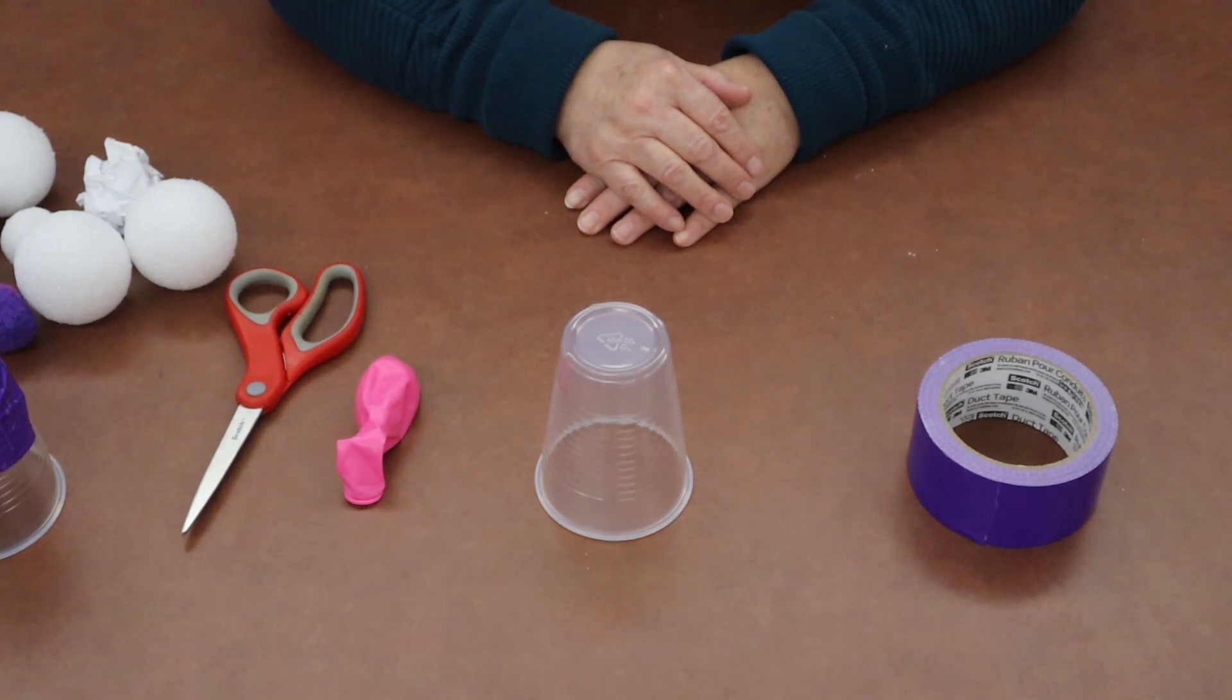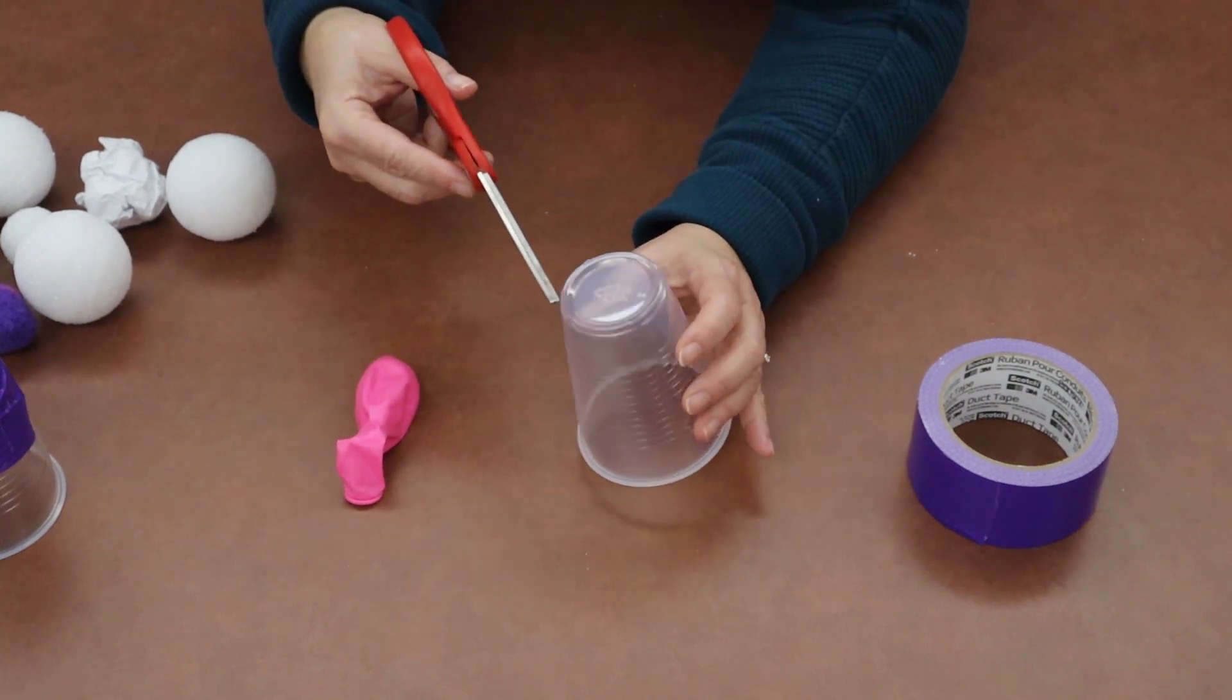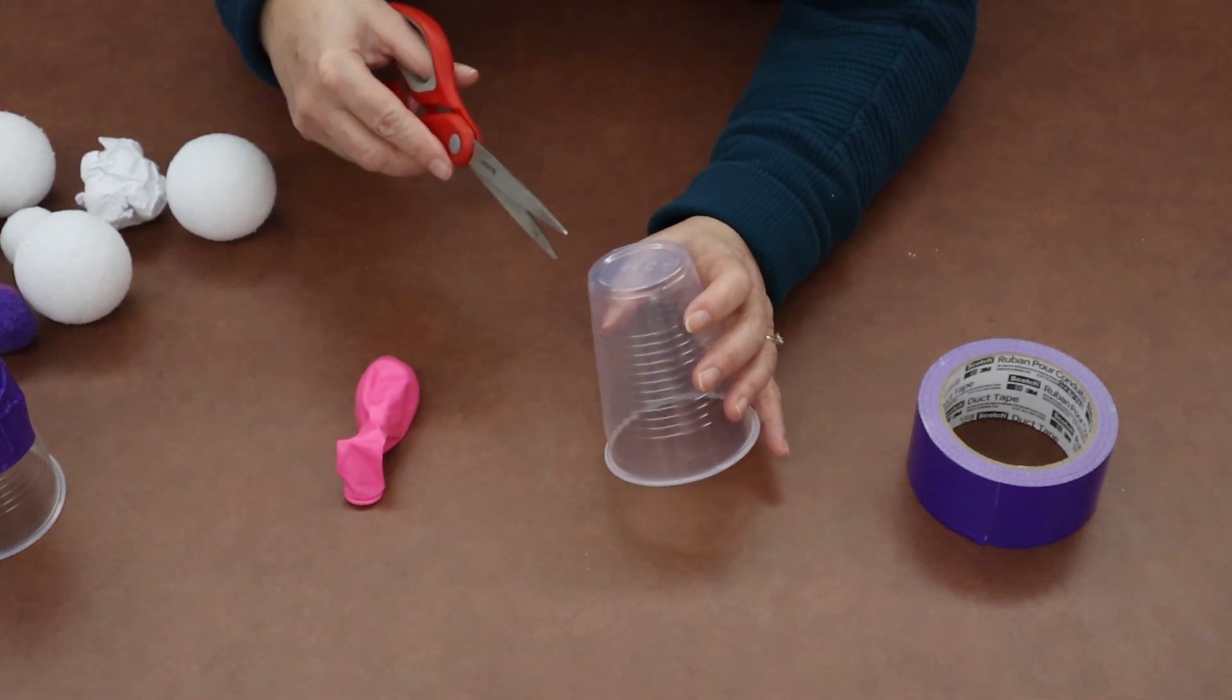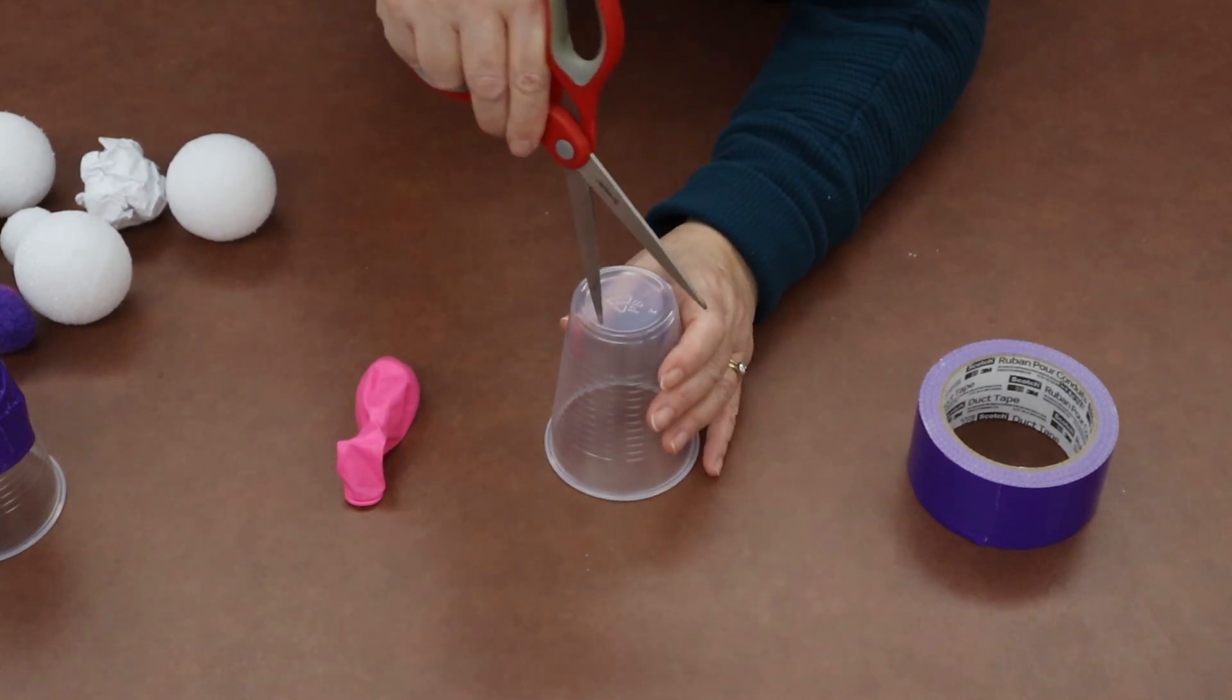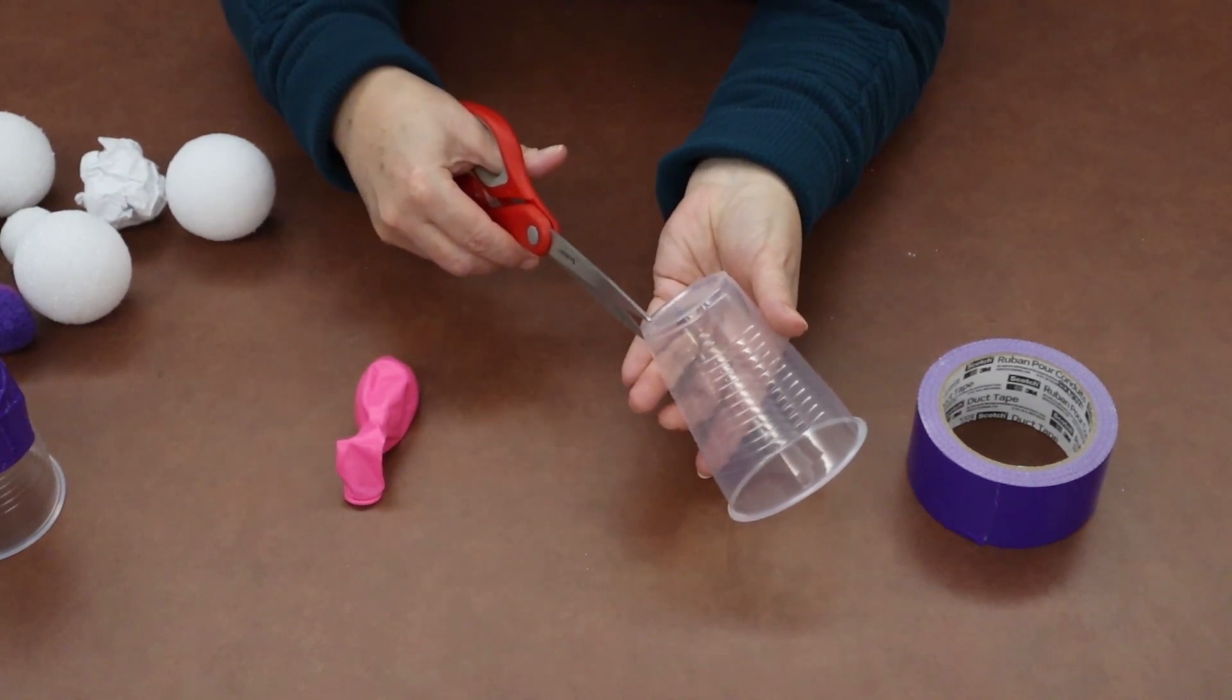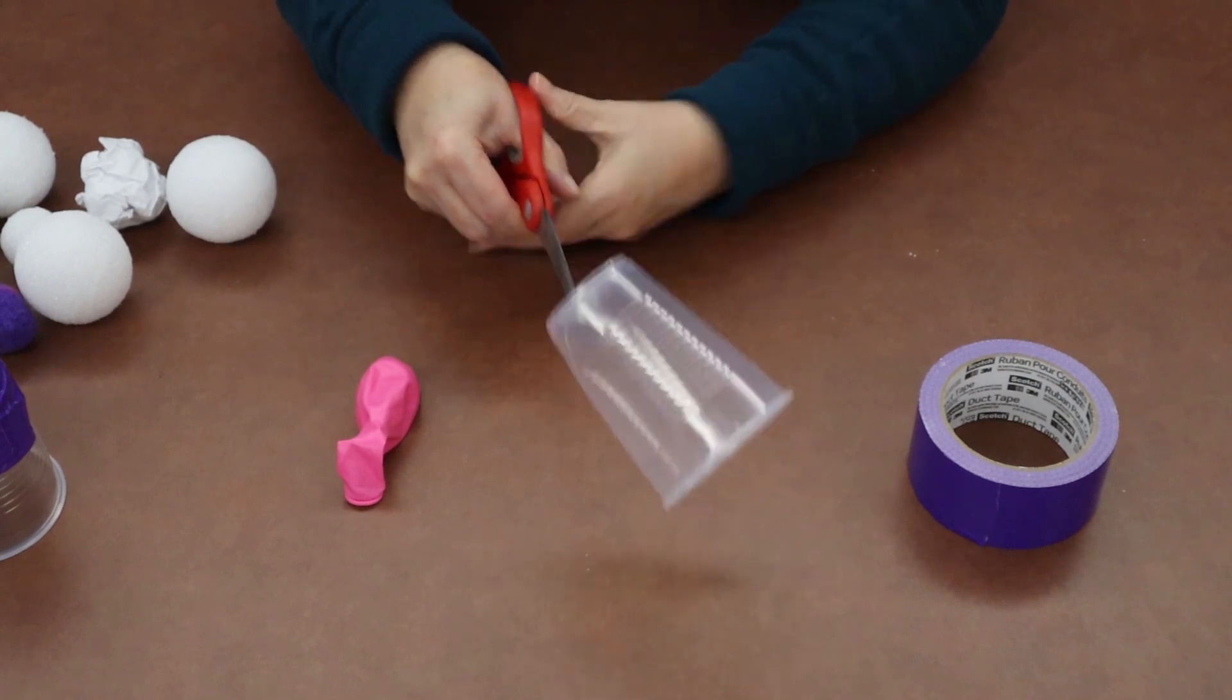The first step is one that you might want an adult to help you do. We're going to take the scissors and cut out the bottom of the cup. This is honestly the hardest part of this project. Some people like to poke like this. To me that's kind of dangerous and I might cut myself. So what I'm going to do to get started is I'm going to pinch the edge of the cup like that with my scissors and get a hole going.